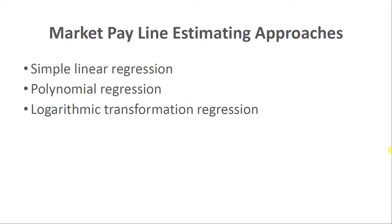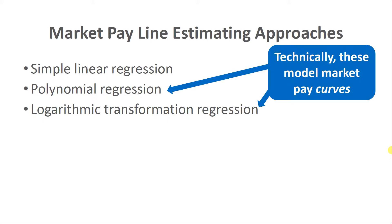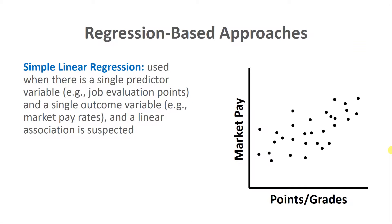When it comes to estimating a market pay line, different approaches can be used. Typically a regression-based approach is used. I'll review when simple linear regression is appropriate, as well as when polynomial regression or logarithmic transformation regression approaches are appropriate — the latter two being used for non-linear associations. Technically, these don't result in a straight line but rather a market pay curve, since a curve includes non-linear associations.